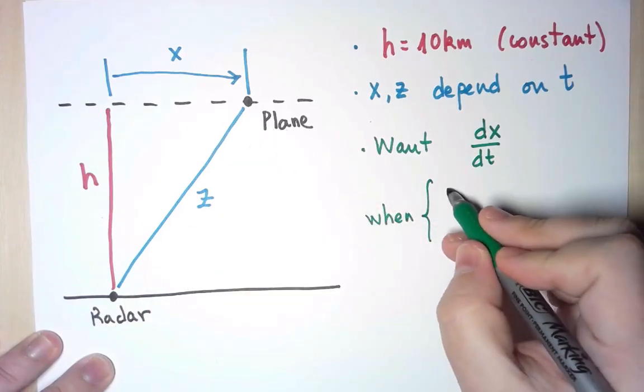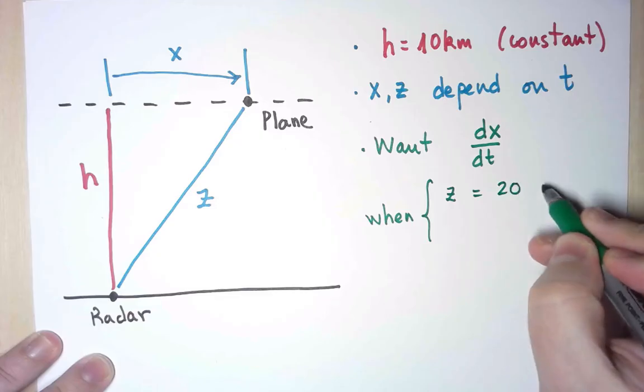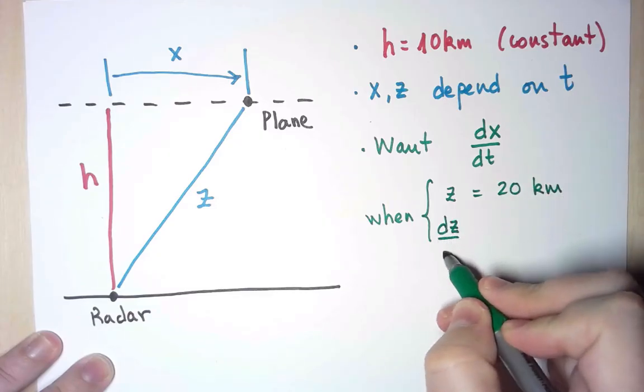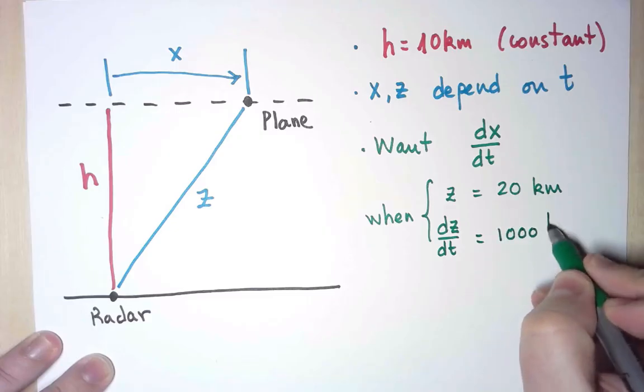so that z is 20 km, and is changing at the rate of, that's the derivative of z with respect to t, 1,000 km per hour.